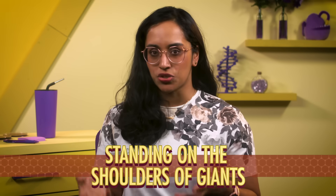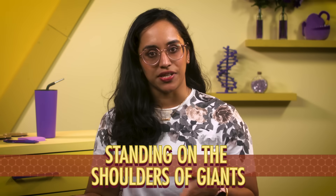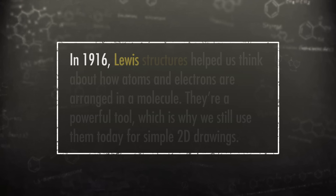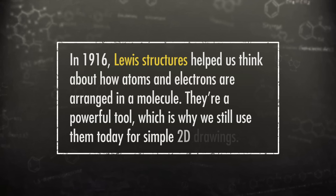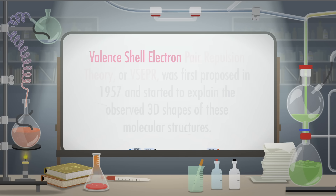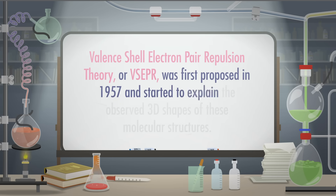Since organic chemistry became a thing, there have been lots of improvements to theories about how atoms interact and form chemical bonds with each other to make molecules. It's like the quote 'standing on the shoulders of giants' — each theory explains a phenomenon that the previous theory couldn't quite handle. In 1916, Lewis structures helped us think about how atoms and electrons are arranged in a molecule. They're a powerful tool, which is why we still use them today for simple 2D drawings. These structures use straight lines to represent covalent bonds and dots for unbonded valence electrons.